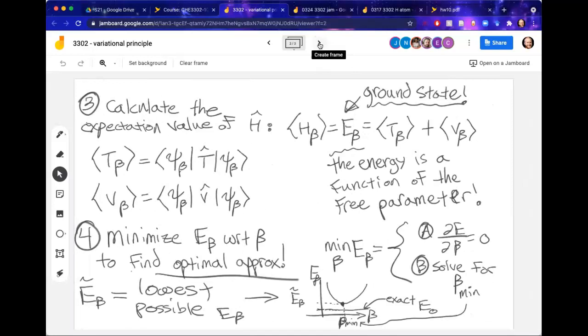So to continue with the algorithm, we need to calculate the energy. Remember that the energy, the ground state energy, is that quantity that I'm trying to minimize. So I need to calculate the expectation value of the Hamiltonian. In this way, you're seeing me throw a little beta on the bottom of everything as a way to help you remember that it should be a function of beta. Beta is a parameter, and I'm able to change the value of beta in order to change the value of the energy.